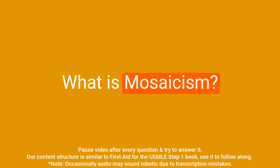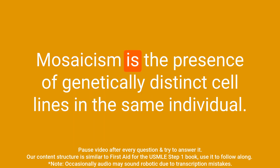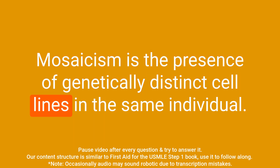Question: What is mosaicism? Answer: Mosaicism is the presence of genetically distinct cell lines in the same individual.